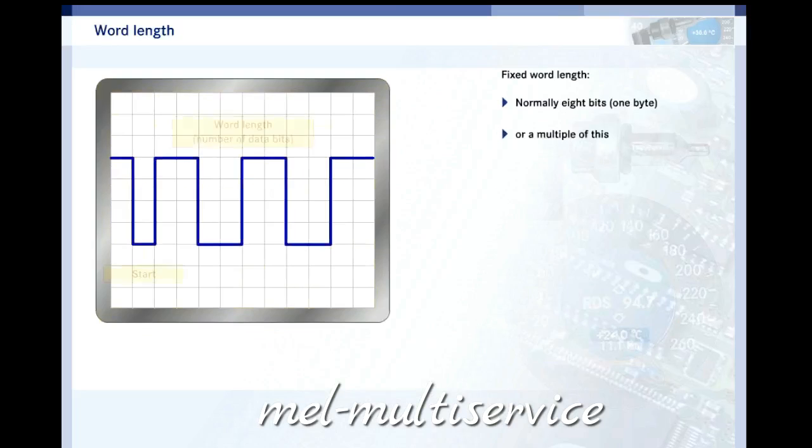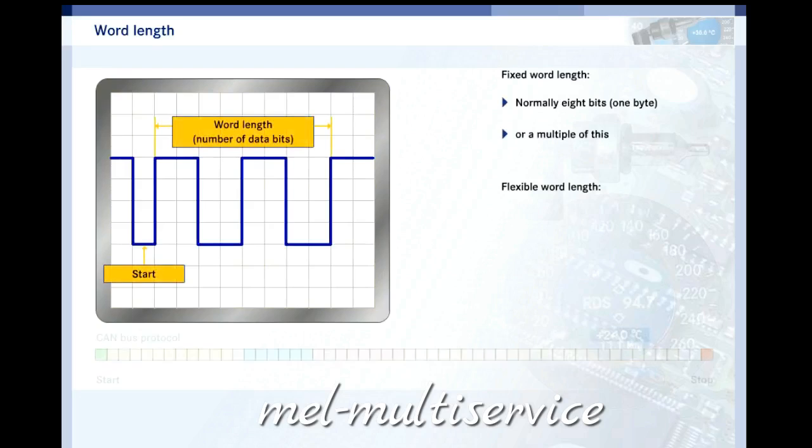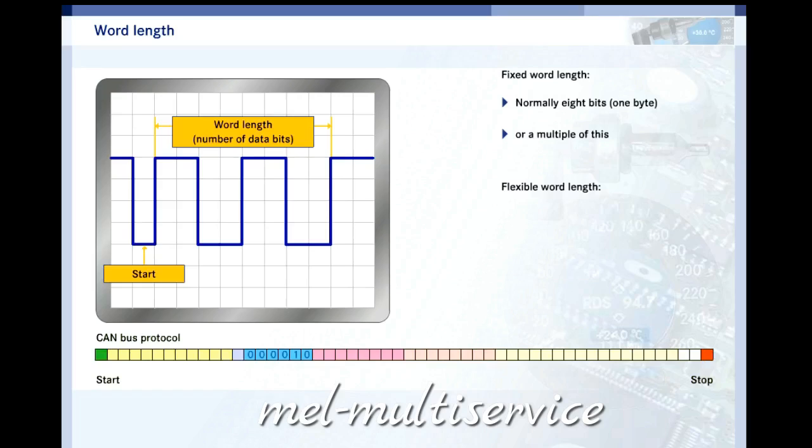The word length of a data transfer is usually defined as 8 bits, a byte, or a multiple of this. It can also be used flexibly. On a CAN bus, the number of following bytes is announced at the start of the transfer. In this way, the receiver can anticipate the number of bytes to follow.